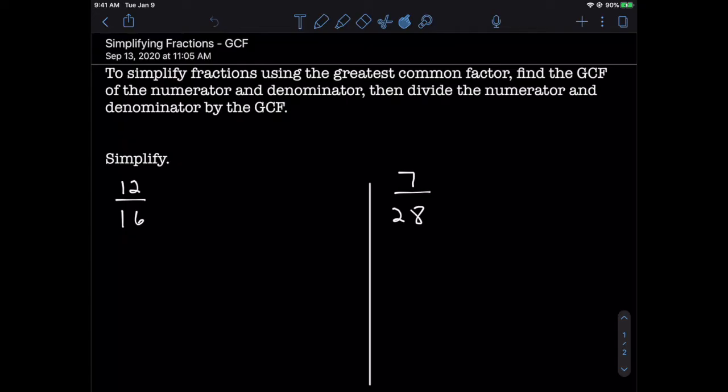If you want to simplify fractions using the greatest common factor, you've got to find the greatest common factor first, and then you're going to divide the numerator and denominator by that number. How do you find the GCF? Well, sometimes you just kind of know by looking at the numbers, but I've got a slightly more organized way of doing this.